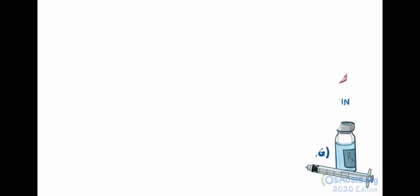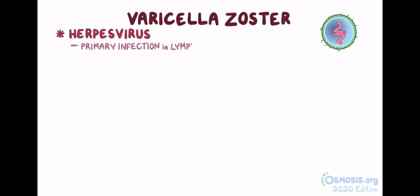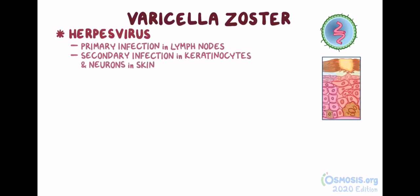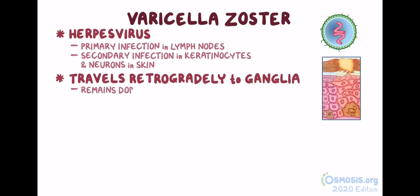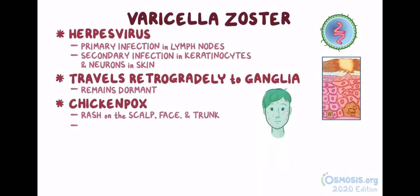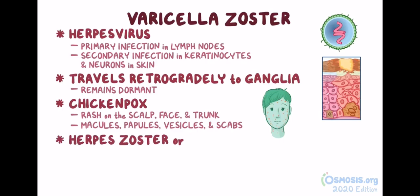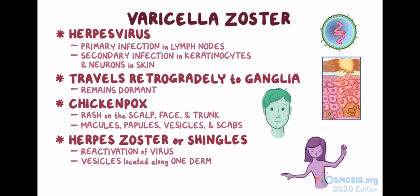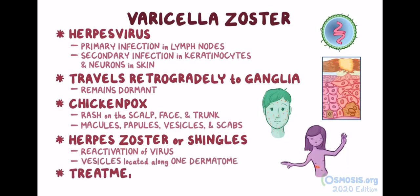As a quick recap: varicella zoster virus is a herpes virus that causes primary infection in the lymph nodes, and secondary infection in the keratinocytes and neurons in the skin. From the neurons in the skin, it travels retrogradely to the nerve ganglia, where it remains dormant. Chickenpox is characterized by a rash on the scalp, face, and trunk that contains macules, papules, vesicles, and scabs at the same time. Herpes zoster, or shingles, is caused by the reactivation of the virus, with vesicles located along one dermatome. Treatment is usually symptomatic, and in some cases includes antiviral drugs.